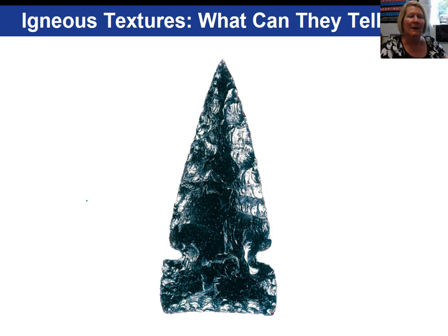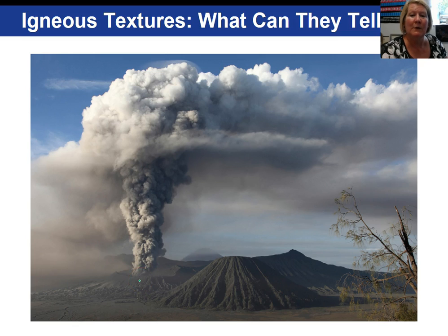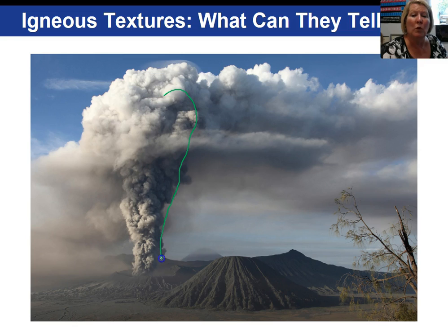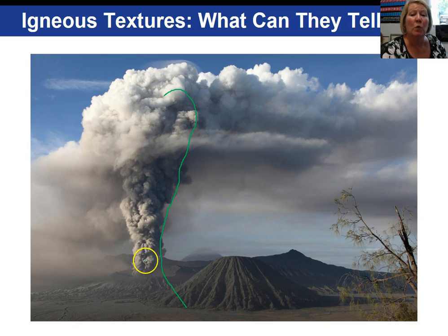This is a Native American arrowhead made out of volcanic glass, exhibiting a glassy texture. This is a picture of an eruption column for a pyroclastic eruption — a lot of ash and debris that goes up into the air, eventually collapses on itself, comes rushing down the side of the volcano, and incinerates anything in its path. Once again, pyroclastic eruptions are the most dangerous. Rocks that develop are called pyroclastic rocks — that is the texture for this igneous rock.